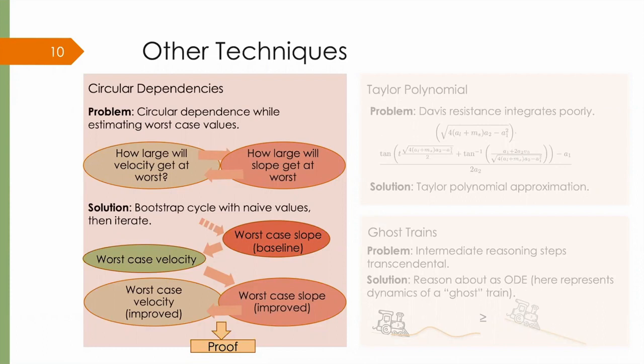in order to predict how large velocity will get, I would like to know the slope of the track, to know how gravity will affect velocity. But in order to know the slope of the track, I would like to know how large velocity will get, to know how quickly my current slope could change.